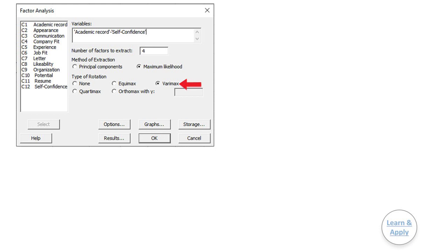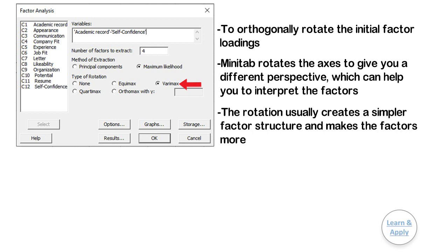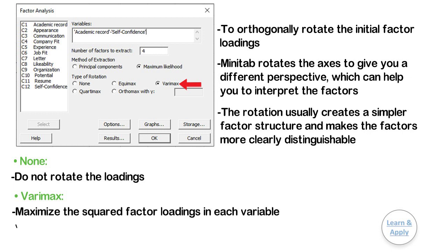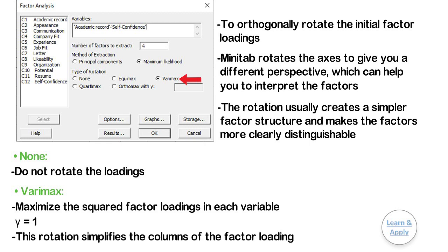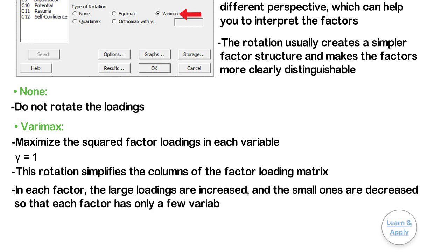Step 6: Under Type of Rotation, select Varimax. Minitab rotates the axis to give you a different perspective, which can help you interpret the factors. The original factor loadings are often difficult to interpret. Rotation creates a simpler factor structure and makes the factors more clearly distinguishable. Rotation also tends to remove general factors that load highly on all variables. The Varimax option maximizes the squared factor loadings in each variable (Gamma = 1) and is the most widely used rotation method. This rotation simplifies the columns of the factor loading matrix so that each factor has only a few variables with large loadings, while smaller ones are decreased.